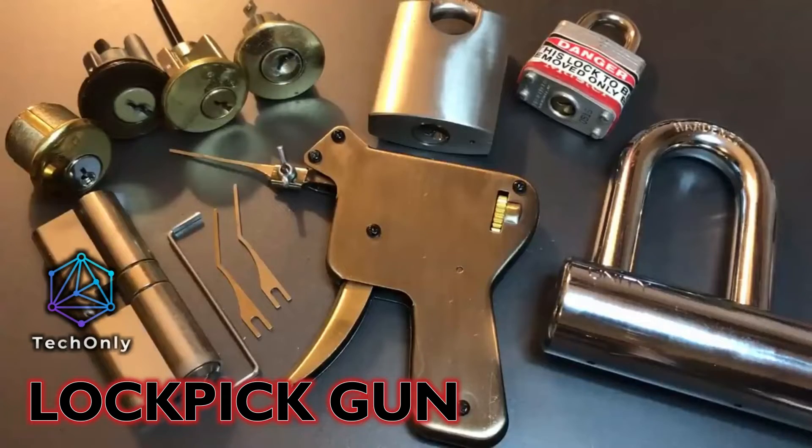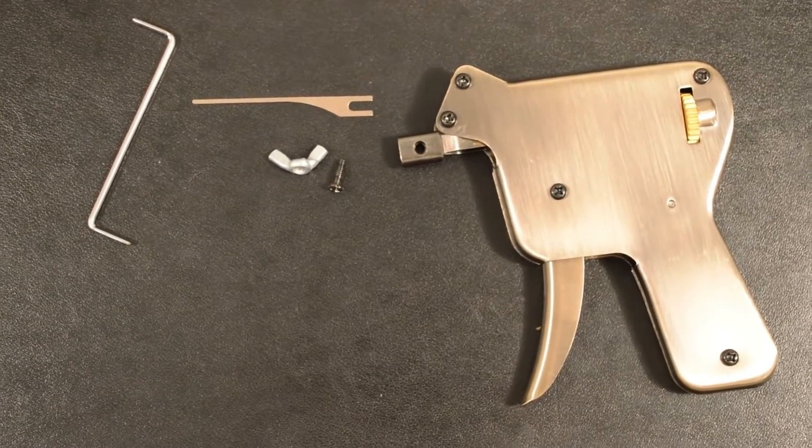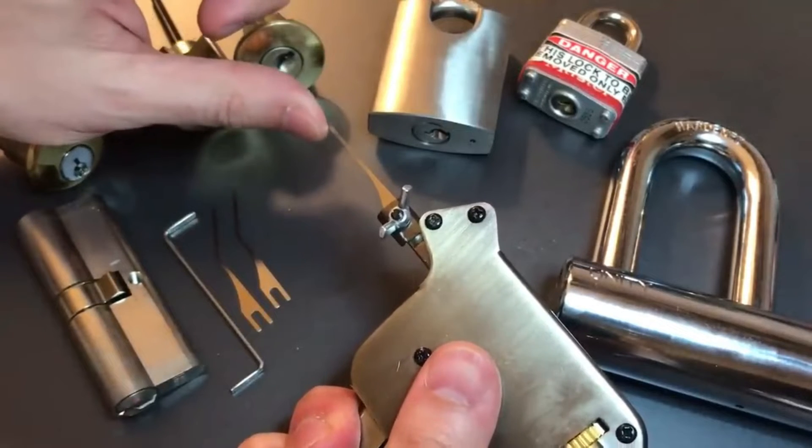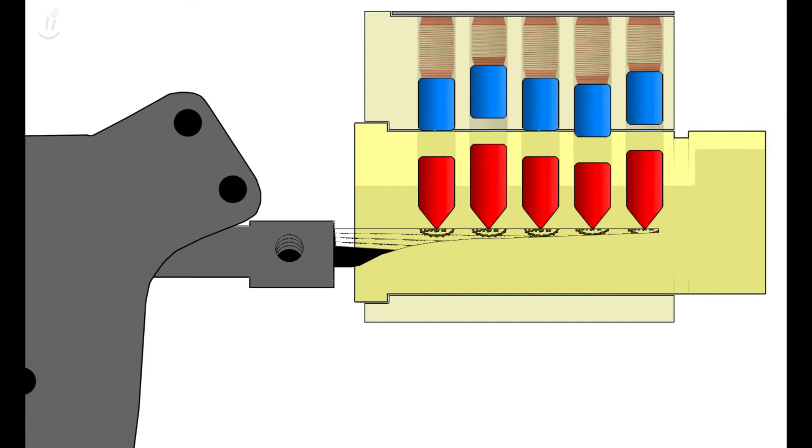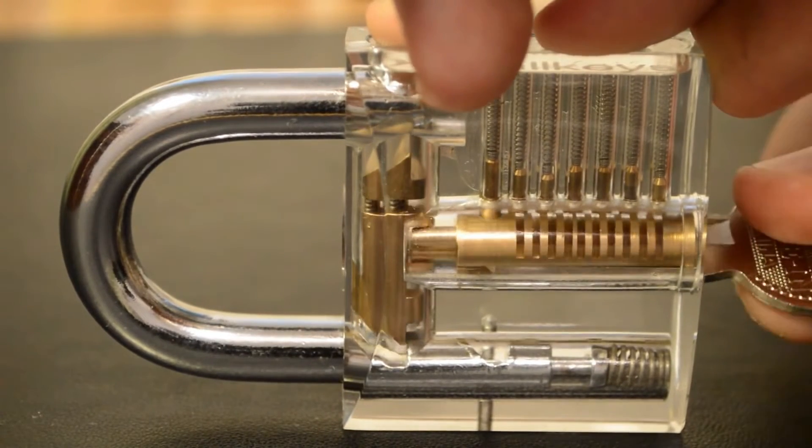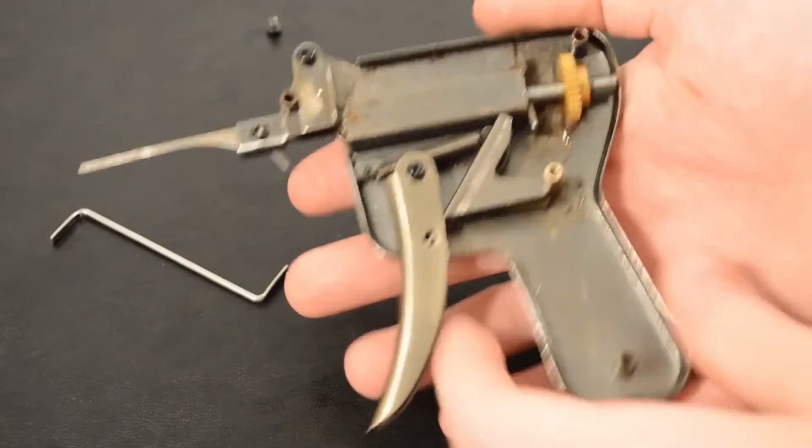Meant to be used as a practice tool, this lock-snapping gun set was used many times in theft. And that's the reason why Amazon and other retailers removed it from the sale. So the snap gun uses a primary law of physics, the transfer of energy, to momentarily burst all of the driver pins out of the lock cylinder without sending the bottom pins up into it.